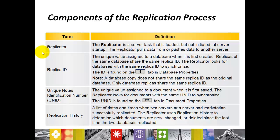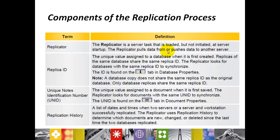What are the components required when you want to create or run the replication process? The components required are: the Replicator, which is a server task; ReplicaID, which is an identification number for replica copies; the Unique Node Identification Number, called UNID; and Replication History. The Replicator is a server task that is loaded but not initiated at server startup. The replicator pulls data from or pushes data to another server.